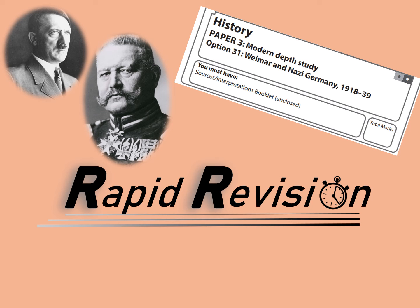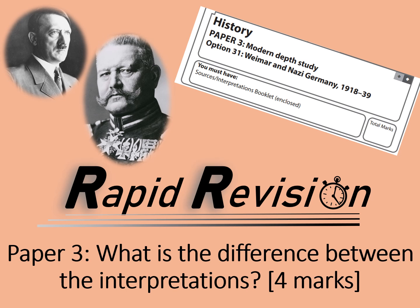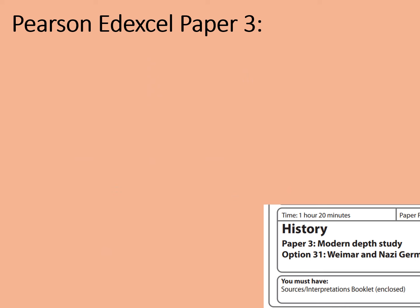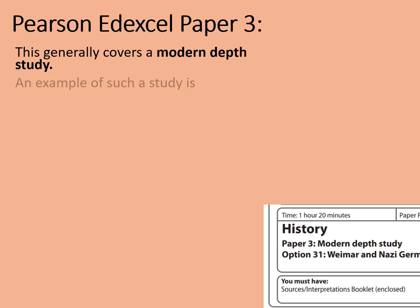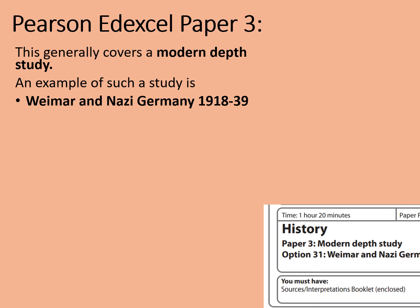Welcome to this rapid revision video looking at exam skills. This time we're looking at paper three and the first of the interpretations questions, asking what is the difference between the interpretations. The topic for this paper will be Weimar and Nazi Germany. A bit of a reminder as to how the paper is structured — this generally covers a modern depth study, an example of which is Weimar and Nazi Germany 1918 to 1939.